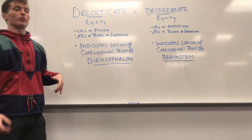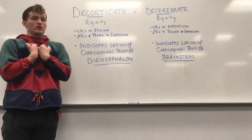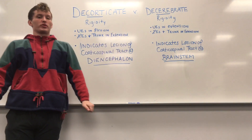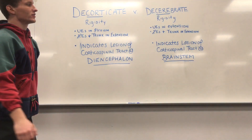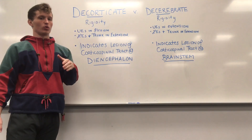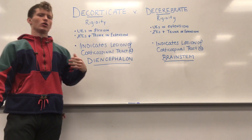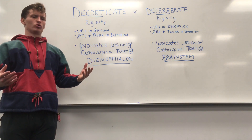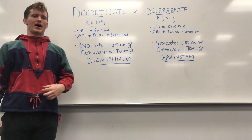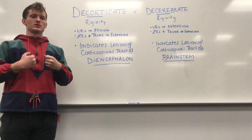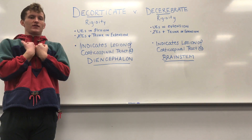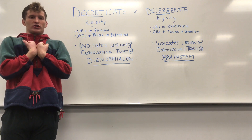With decorticate rigidity, our upper extremities are in this rigid flexion pattern. The way I like to remember that is with decorticate, I look at 'cord' right in the middle of the word, and I think spinal cord — the spinal cord is at the midline of the body — and then it clicks. So our upper extremities are stuck in this flexion rigidity pattern with decorticate rigidity.